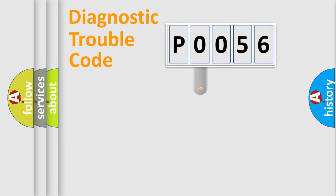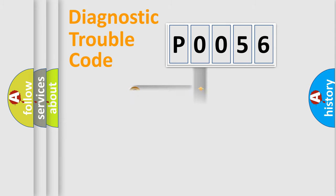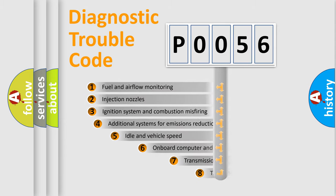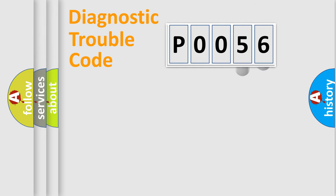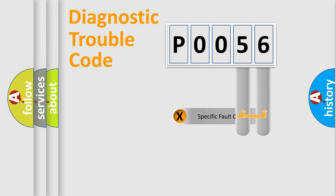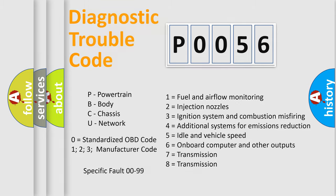This distribution is defined in the first character of the code. If the second character is expressed as zero, it is a standardized error. In the case of numbers 1, 2, or 3, it is a manufacturer-specific error expression. The third character specifies a subset of errors. The distribution shown is valid only for the standardized DTC code. Only the last two characters define the specific fault of the group. Note that such a division is valid only if the second character code is expressed by the number zero.